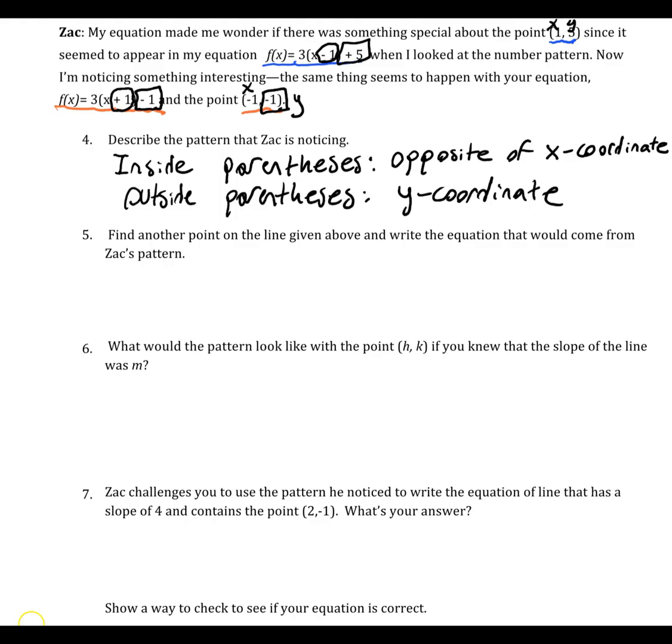So that's interesting. So, in general, what would the pattern look like if the point was (h, k), and the slope of the line was m?